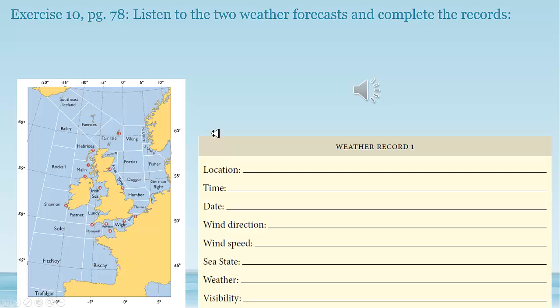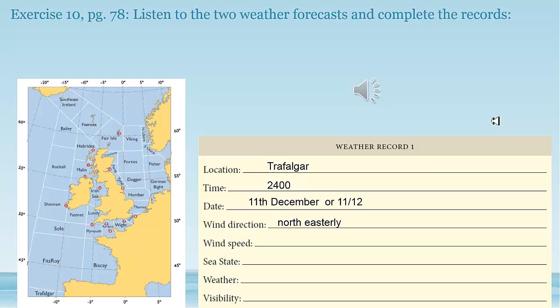Okay great, let's go and see if we got it right. So the location is Trafalgar, and then the time — 2400, say midnight, and then the date — the 11th of December. The wind direction — north-easterly. The wind speed, Beaufort scale — 4 or 5. The sea state was moderate or rough sea, and then weather — showers, visibility — good.